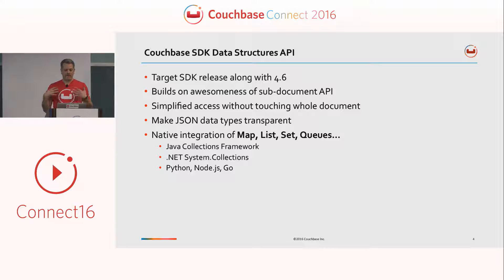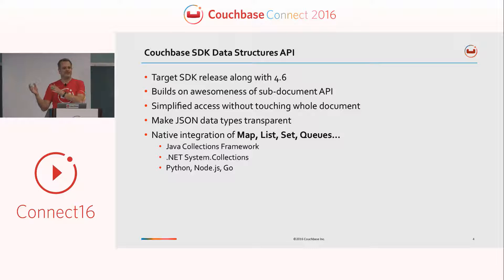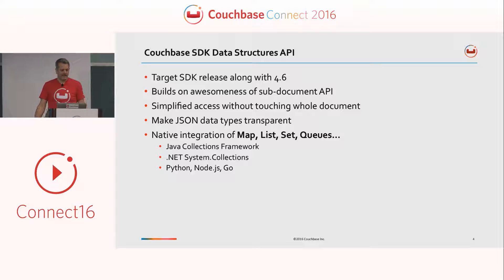The idea is that we've got JSON data in the background. We have our own implied understanding of what some of the types are in JSON when you map them into your application. We want to make that mapping easy for you, to remove some of the layers of converting data between types from JSON — maybe strings, from a list into a list in your language. That's what the Data Structures API does. We've implemented maps, lists, sets, and queues, and I'll go over each of them in a minute.